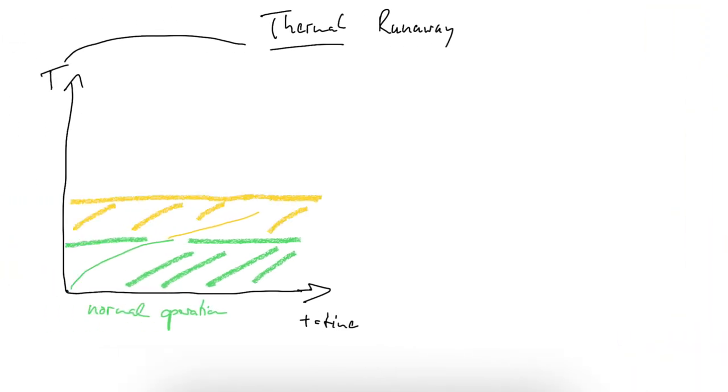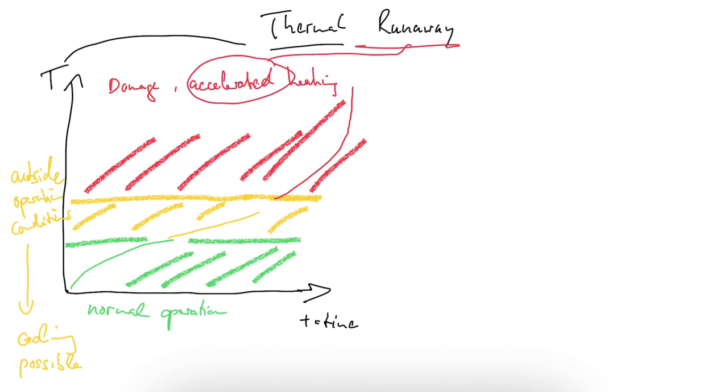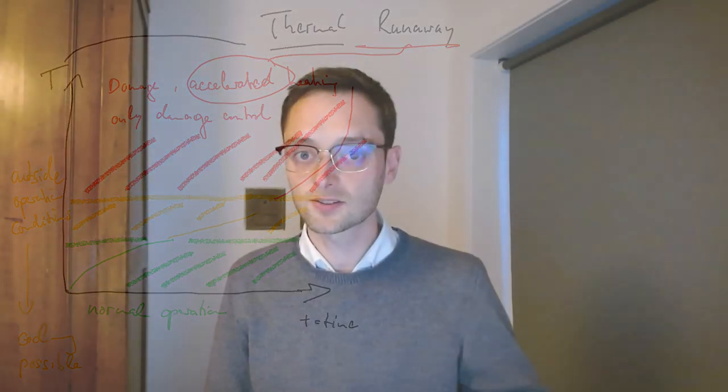The question is of course what makes a thermal runaway start, and there we have basically a lot of reasons. At the top level: first, heat is generated from some reaction or some external effect — for example, the connection or bond to the cell is not well enough, and then you have a high resistance there. When you charge and discharge you generate a lot of heat at this resistance point, at this bond. Or it can also be internal — there is really some manufacturing defect and that leads to some reaction that generates heat while operating the cell.